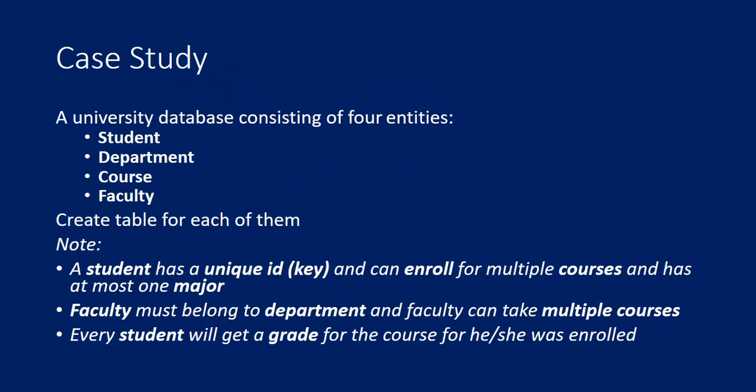Before starting, let's take a case study about a university. A university database consists of four entities: student, department, course, and faculty. We need to create a table for each of them. Note that a student has a unique ID which is a key, can enroll for multiple courses, and has at most one major. Faculty must belong to a department, faculty can teach multiple courses, and every student will get a grade for the course they enrolled in.